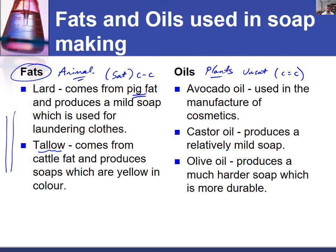Avocado oil is used in the manufacture of cosmetics. Castor oil produces a fairly mild soap, and olive oil produces a harder soap that is a little bit more durable. Different types of fats and oils have been experimented with in order to determine which are the best ones and which will produce good long-lasting soaps.